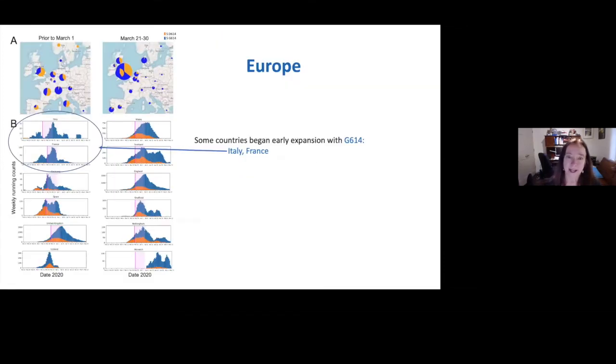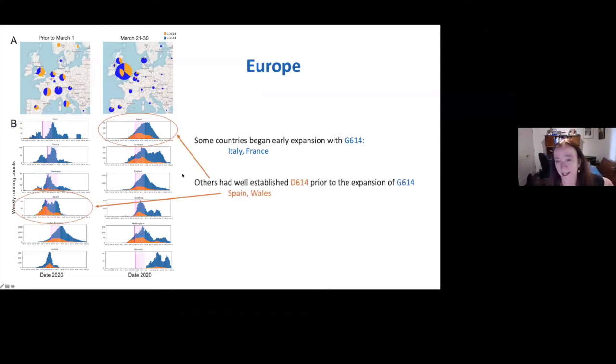So we also made other kinds of figures to try to look at this. For example, here is Europe. This is prior to March 1st, and this is three weeks later, and you're seeing a big shift towards blue. Some of the countries really started out primarily with the G-clade epidemic, like Italy and France, although there was a little bit of the original form in Italy. The changes can't be observed here obviously because you're starting with the form that got selected everywhere else. There are also countries where you have extremely well-established epidemics like Spain and Wales to start with. And as soon as this thing gets introduced within three weeks, it's shifted.